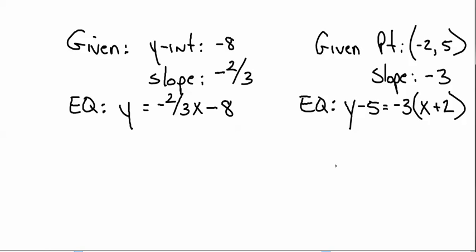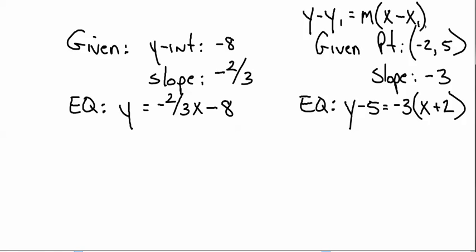Why are they opposite? Because the standard form is y minus y1 equals m times x minus x1. What they're saying is the letter y and the opposite of your y-value — the opposite of 5 is negative 5 — equals the slope times x and the opposite of your x-value. It's given as minus, and minus also means the opposite of. If in standard form those were pluses, then you would write exactly the x and y values in there.